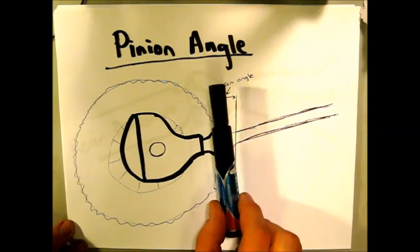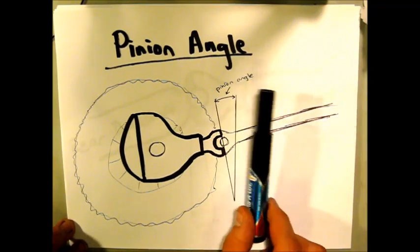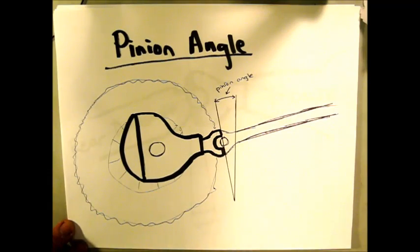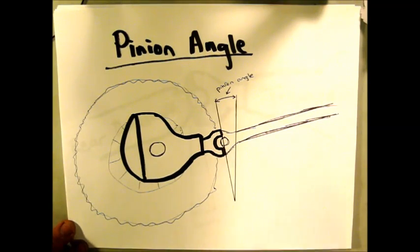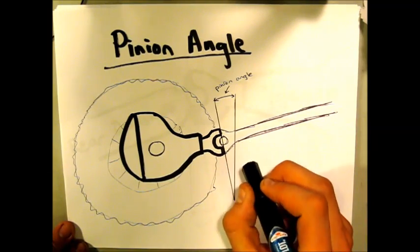Now, you may or may not be able to do it with the driveshaft installed. You might need to unbolt it, which doesn't take a lot of effort. It's typically four bolts, five-sixteenths head that you can just pull off and then measure that angle.